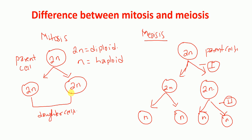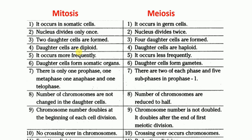So to recap: in mitosis we have one parent cell which is diploid and we get two daughter cells which are also diploid. Now, what are the differences between mitosis and meiosis? In mitosis cell division, it occurs in somatic cells, whereas meiosis cell division occurs in germ cells or sexual cells. In mitosis, the nucleus divides only once, whereas in meiosis the division of nucleus occurs two times. In mitosis, two daughter cells are produced, whereas in meiosis four daughter cells are formed.